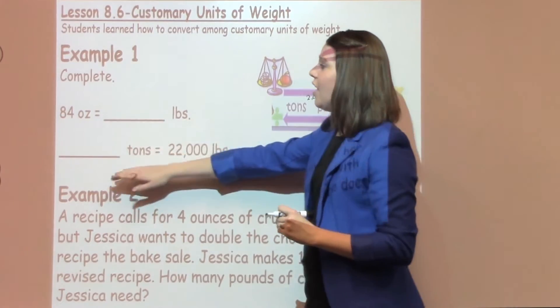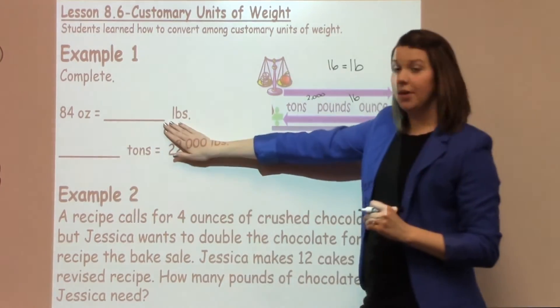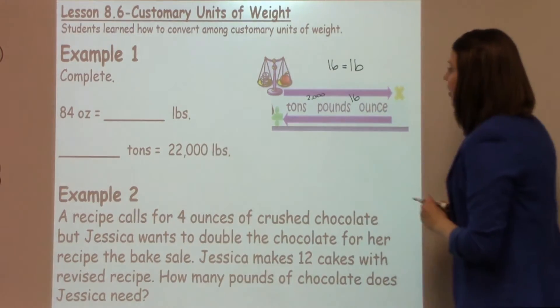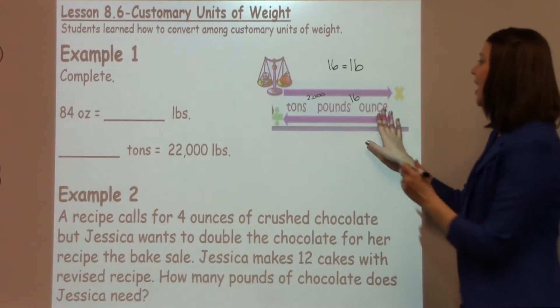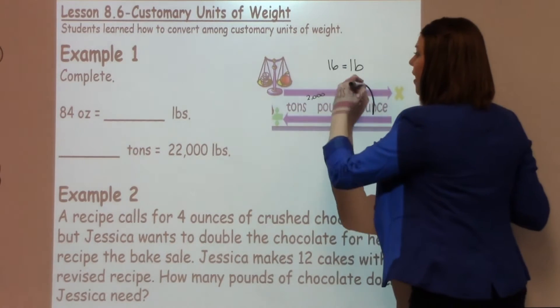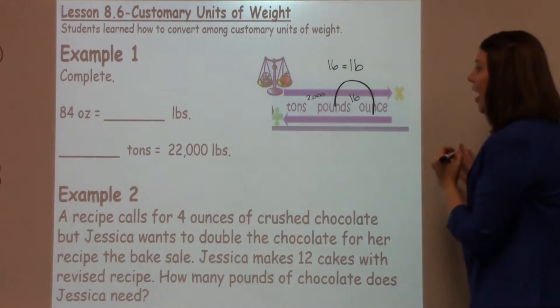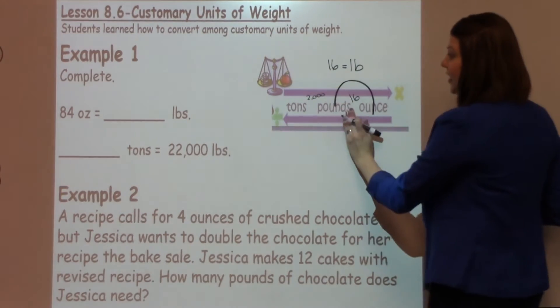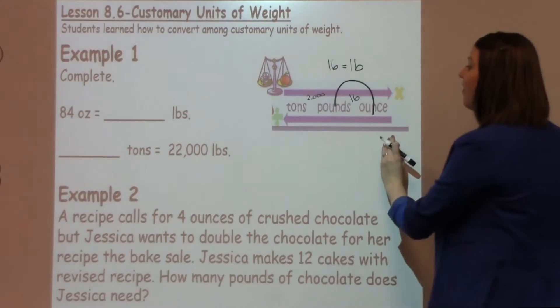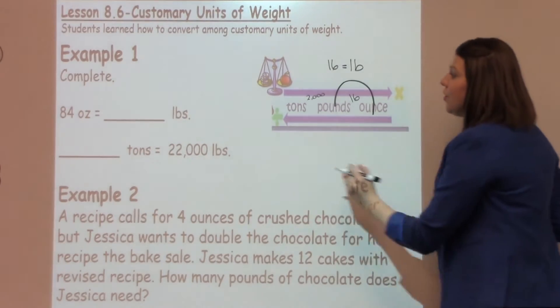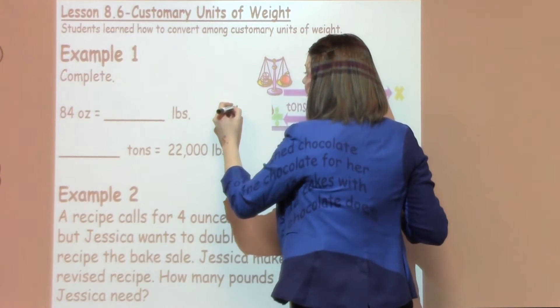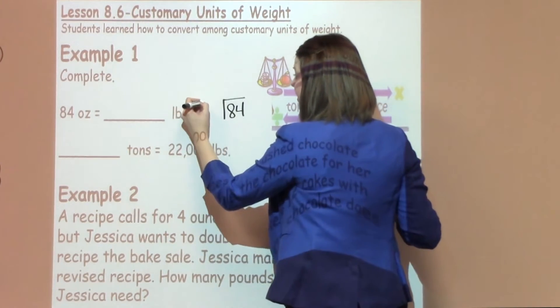Let's look at example number one. We have 84 ounces and we need to convert this to pounds. So the very first thing I'm going to do is I'm going to look at my 84 and I'm going to convert to my pounds. So I noticed that I have hopped over the 16, so I know I'm going to use 16, and I've also moved my way to the left, which means I'm going to be dividing. So in this case, I'm going to be taking 84 divided by 16.